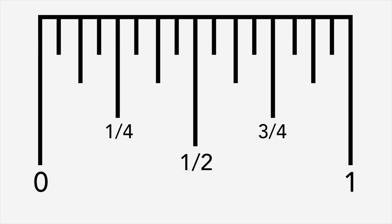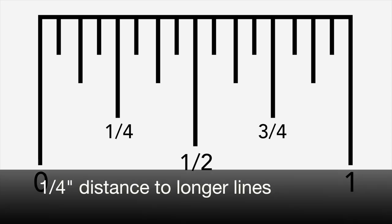The next smallest lines that are between the half inch lines and the one inch lines represent one quarter of an inch, meaning there's one quarter of an inch between the quarter inch lines and the inch or half inch lines.